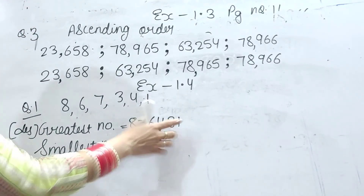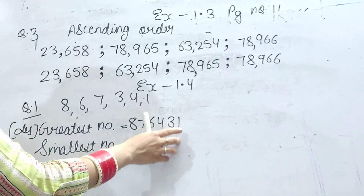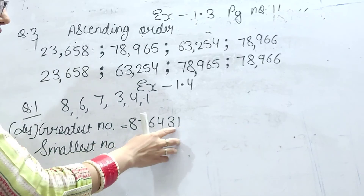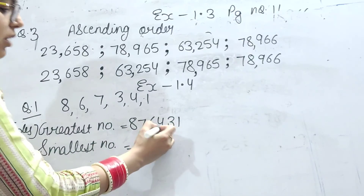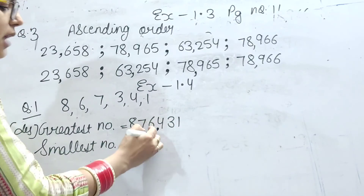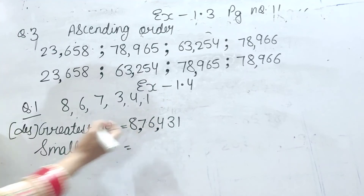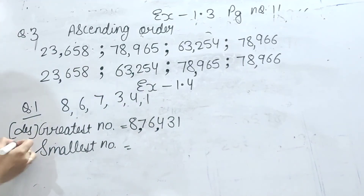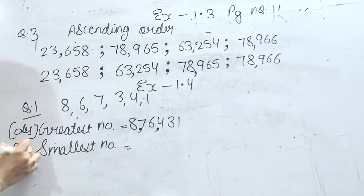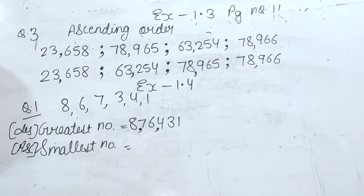Ab comma kaise lagega? By place value chart ke according: ones, tens, hundreds — comma — thousands, ten thousands — comma — and lakh. Or smallest number banane ke liye kaun sa order follow hota hai? Ascending order.